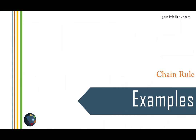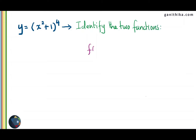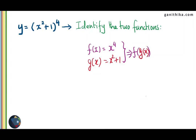Now let us see some examples so that you can understand this much better. Let us say y equal to x square plus 1 whole power 4. Can you see the two functions here? The first function is x to the power of 4, and the second function is x square plus 1. Therefore, we have plugged in the x square plus 1 function into the x power 4 function. So f of g of x here is x square plus 1 whole power 4, where f of x is x to the power of 4 and g of x is the quadratic function x square plus 1.